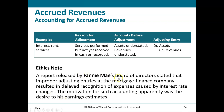Real-world example: A report by Fannie Mae's board of directors stated that improper adjusting entries at the mortgage finance company resulted in delayed recognition of expenses caused by interest rate changes. The apparent motivation was the desire to hit earnings estimates — they didn't accrue for expenses as they should have, showing lower expenses than were actually incurred.